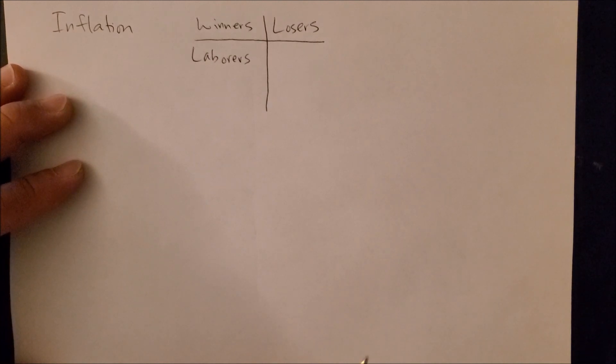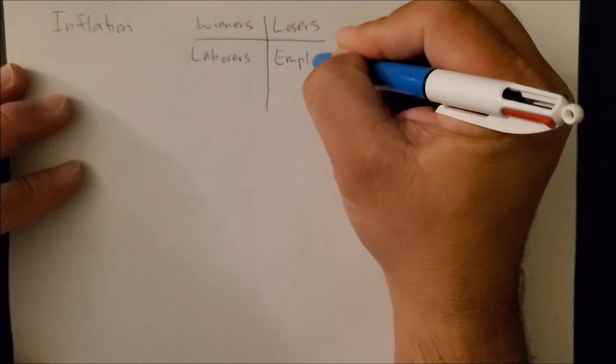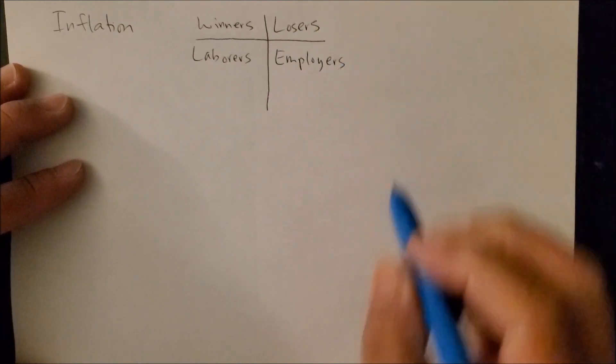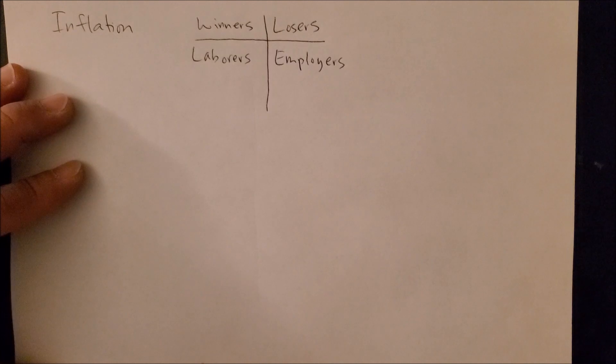On the opposite column, those who lose are folks who are going to employ those laborers, what we call the employers. At a higher wage, employers would now need to cut in other areas, perhaps maybe fixed costs, perhaps may have to look at their own profit and cut that so they tend to lose when it comes to inflation.